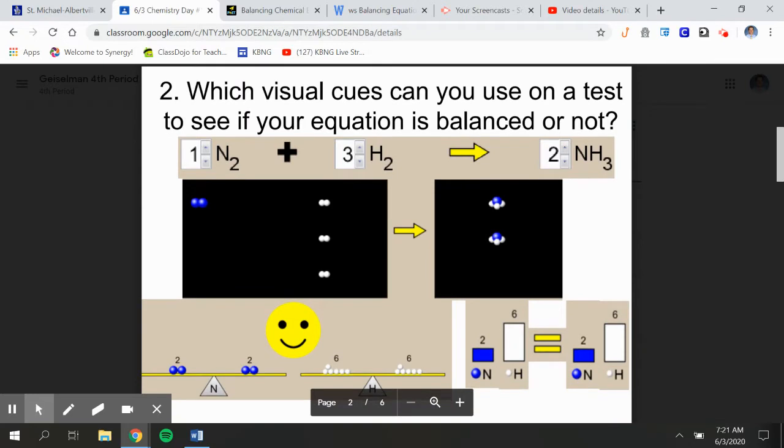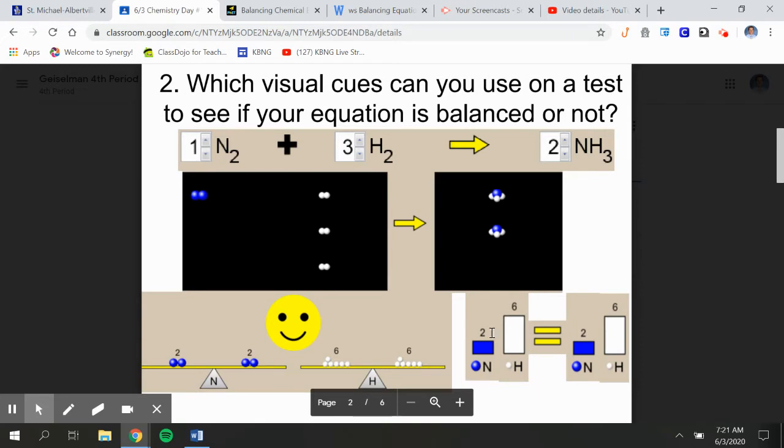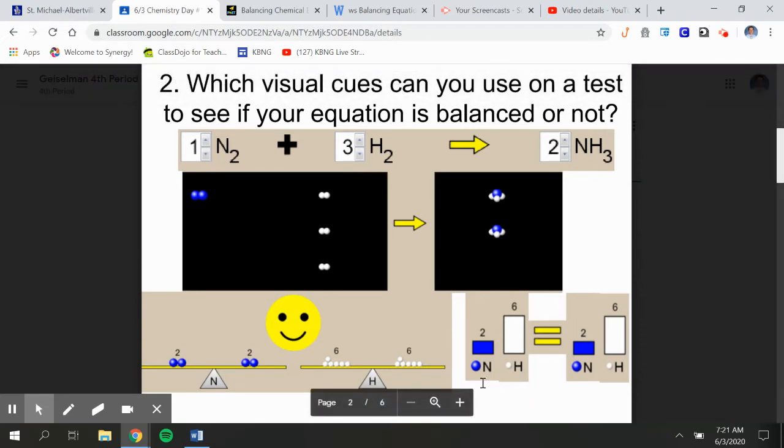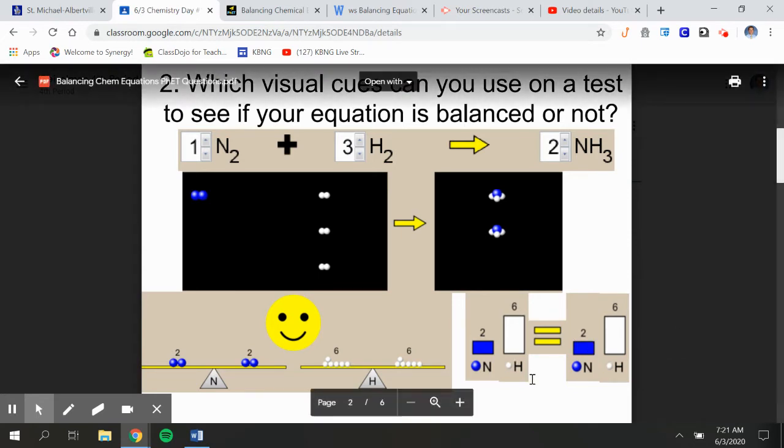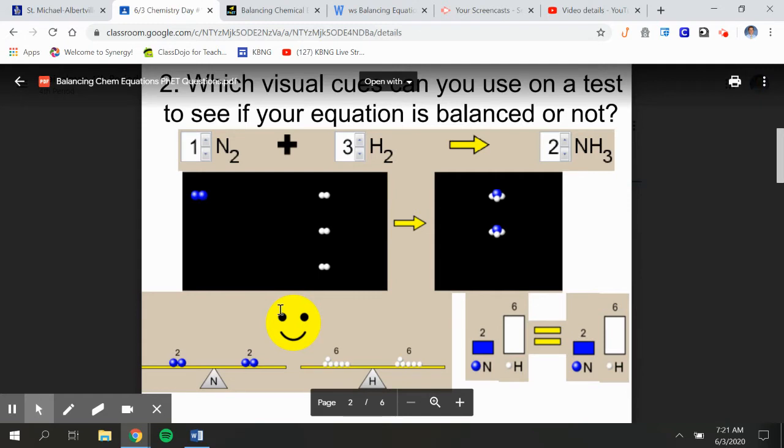So before we even go through the PhET, number two asks you which visual cues can be used on a test to see whether your equation is balanced. So the first thing that you can use, obviously, is this thing down here on the right. So on the right, it has the nitrogen and hydrogen balanced out right here, and it gives you the equal sign. And if they're not balanced, if we don't have six hydrogen and two nitrogen on each side, so that equation is not balanced, you're not going to get the equal sign.